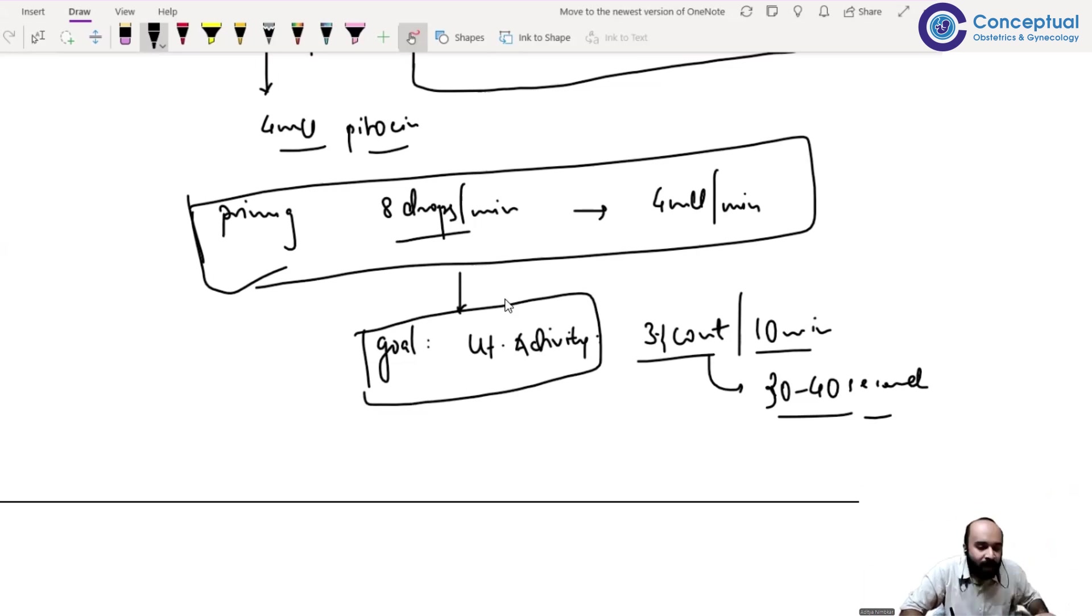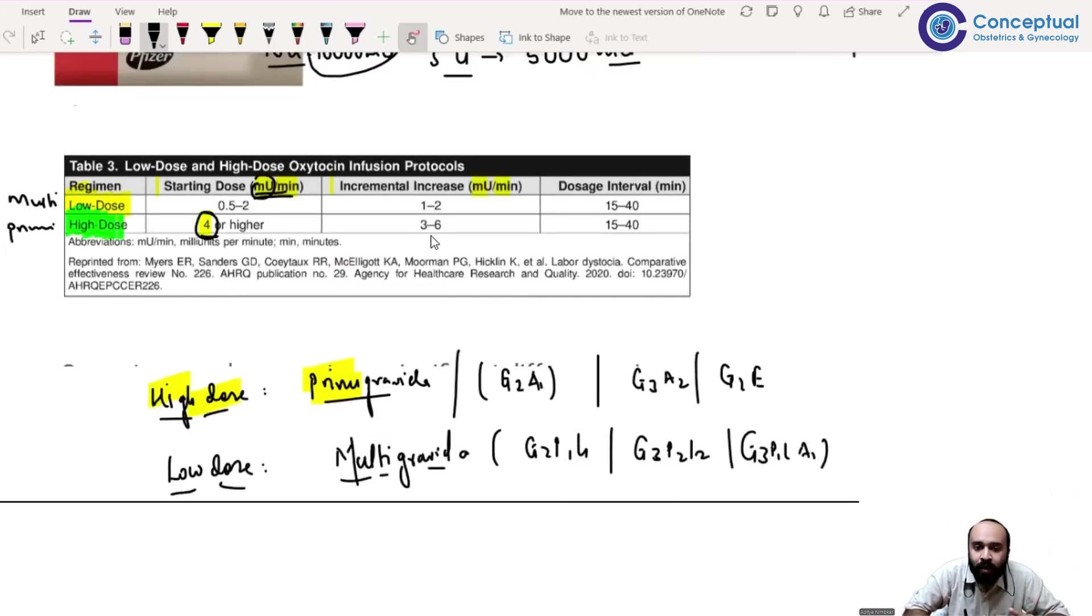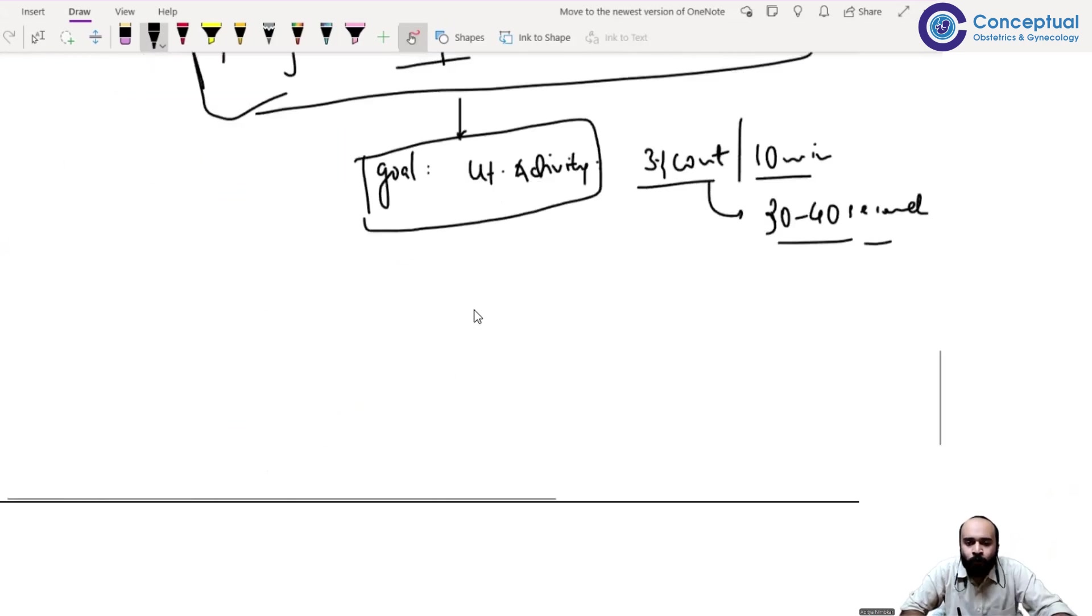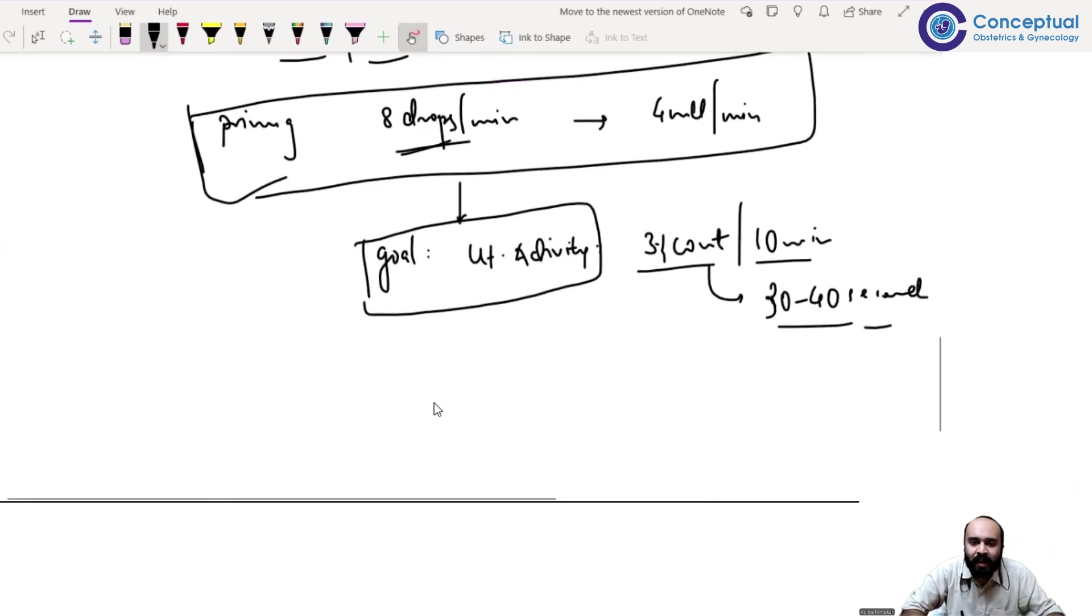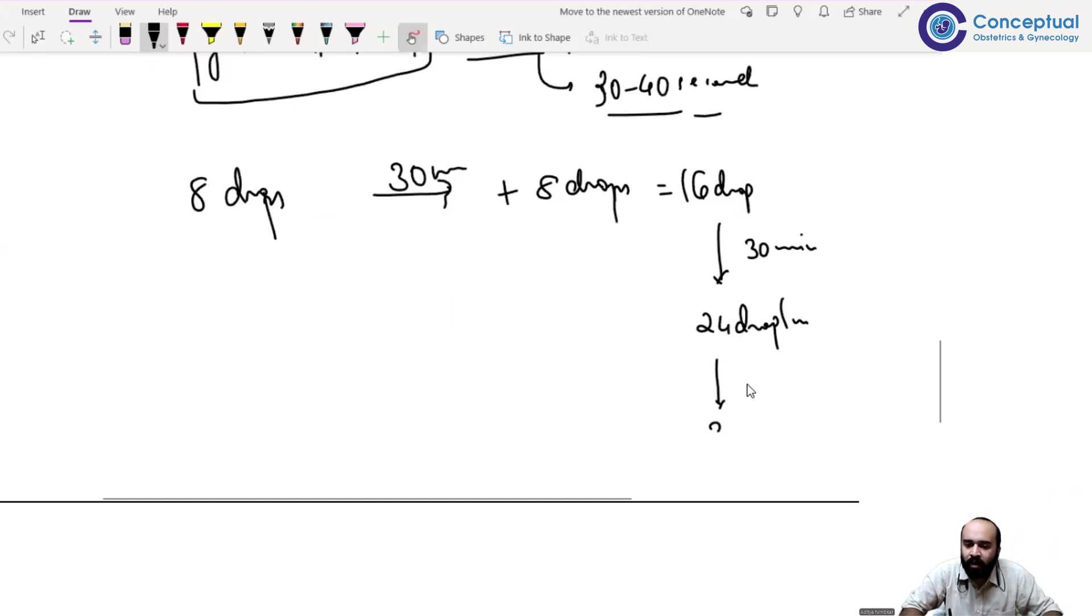Once I start at 8 drops per minute, my goal is to achieve uterine activity of 3 contractions in 10 minutes, with each contraction lasting 30 to 40 seconds. This is good activity. Anything more than 5 contractions and any lasting more than 60 seconds is hyperstimulation - I don't want that. What if 8 drops per minute isn't adequate? Then they've given incremental dosing: increase 3 to 6 milli-units every 15 to 40 minutes. I'll take the average - 4 milli-units every 30 minutes. So after 30 minutes, I add 8 more drops to make 16 drops. If still inadequate, 24 drops, then 32, then 40, 48, 56, and finally 64 drops per minute.